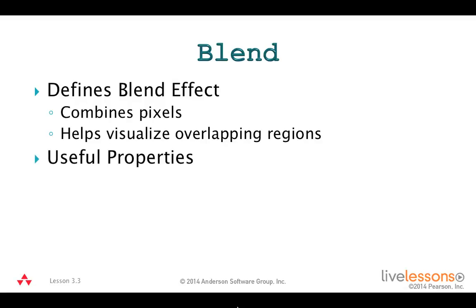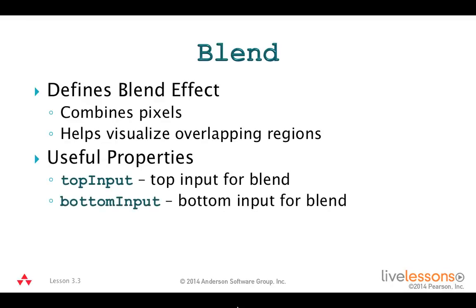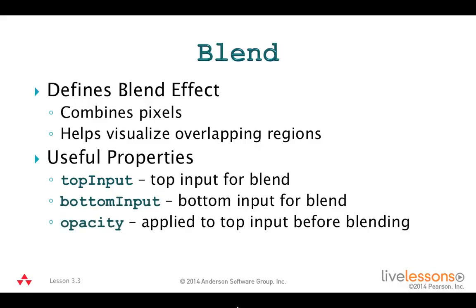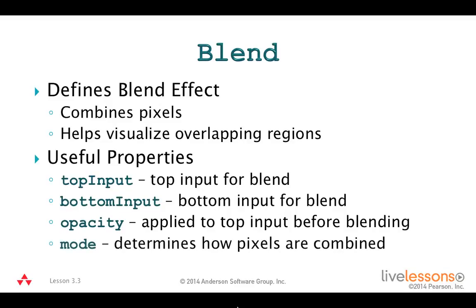Here are the properties. TopInput is the top input for the blend. BottomInput is the bottom input for the blend. Opacity is a value that's applied to the top input before blending, with a range of 0 to 1 and a default of 1. Mode determines how pixels are combined.